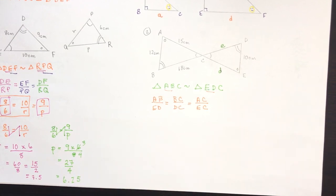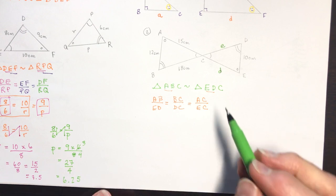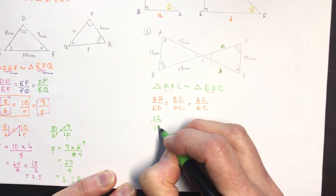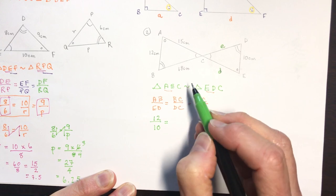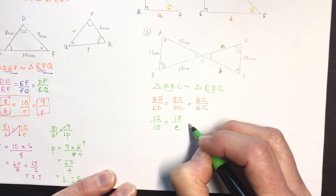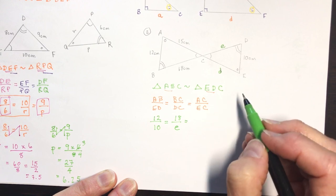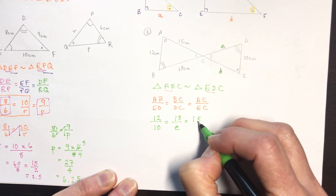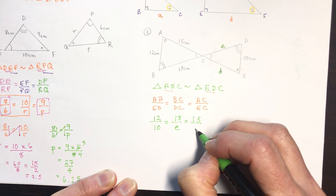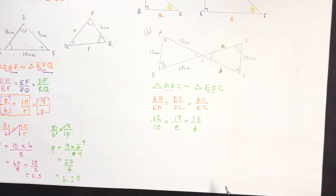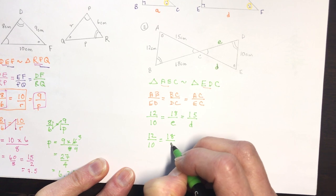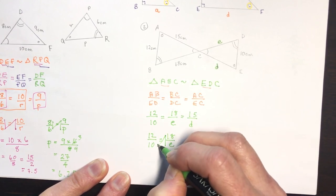Write out the ratios first: AB is to ED, as BC is to DC, as AC is to EC. Now plug in the known values. AB is 12, ED is 10. BC is 18, DC is my unknown e. AC is 15, EC is my unknown d. So I have 12 over 10 equals 18 over e. Using the N-method: e equals 18 times 10 divided by 12. Dividing 6 into 12 and 18, and 2 into 10, gives e = 15.